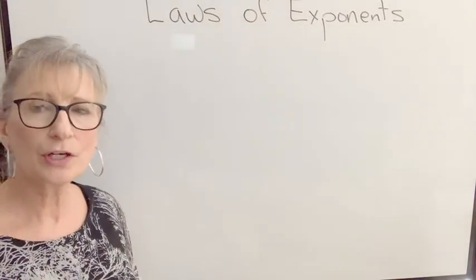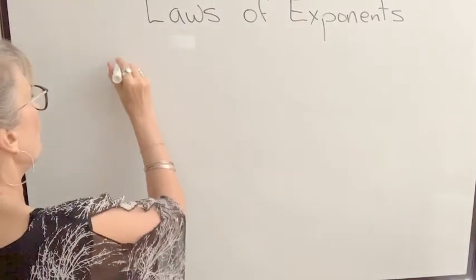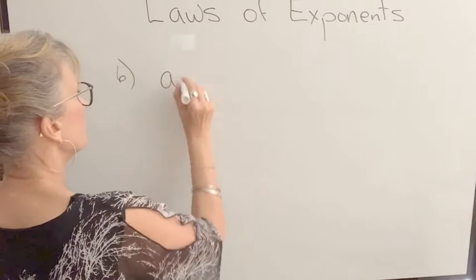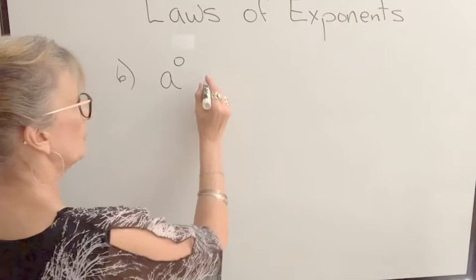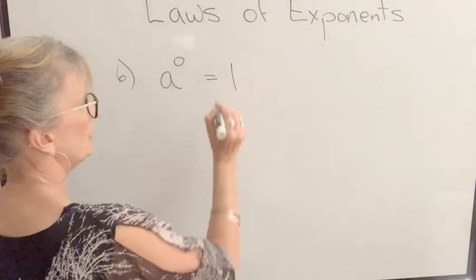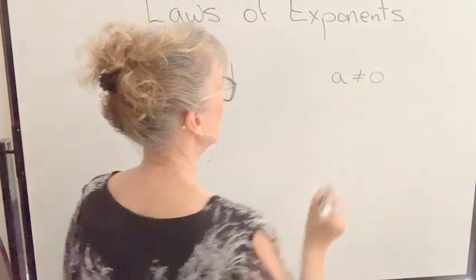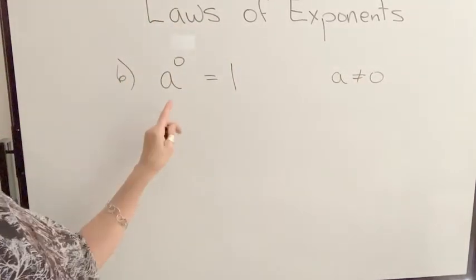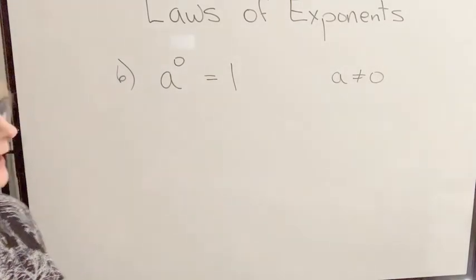Now the last rule I want to talk about in this particular video is what is a base raised to the power of 0. It's kind of an interesting one. It's equal to 1 as long as a does not equal 0. And I'm going to show you why that works because it's sort of hard to understand why does something to the power of 0 equal 1.